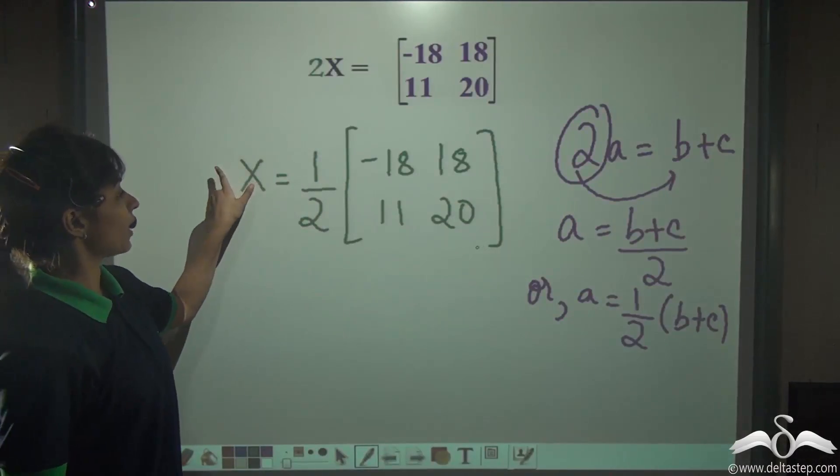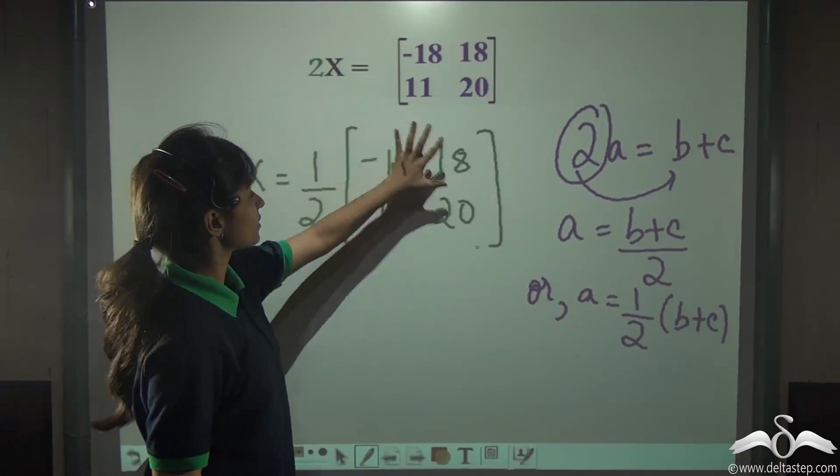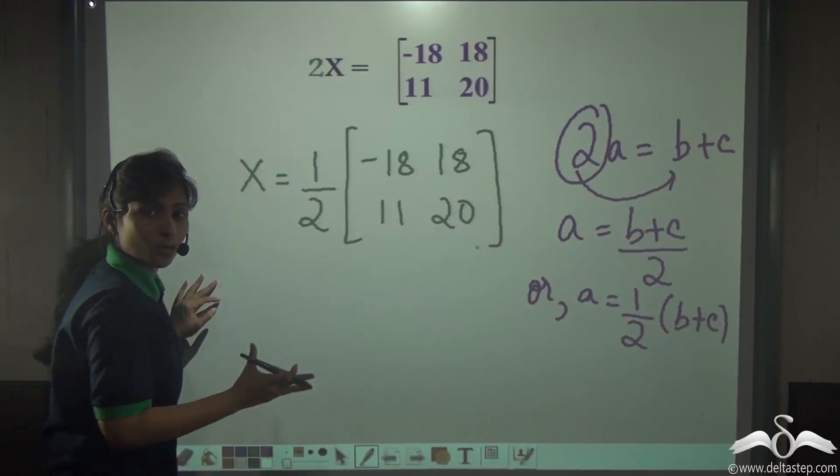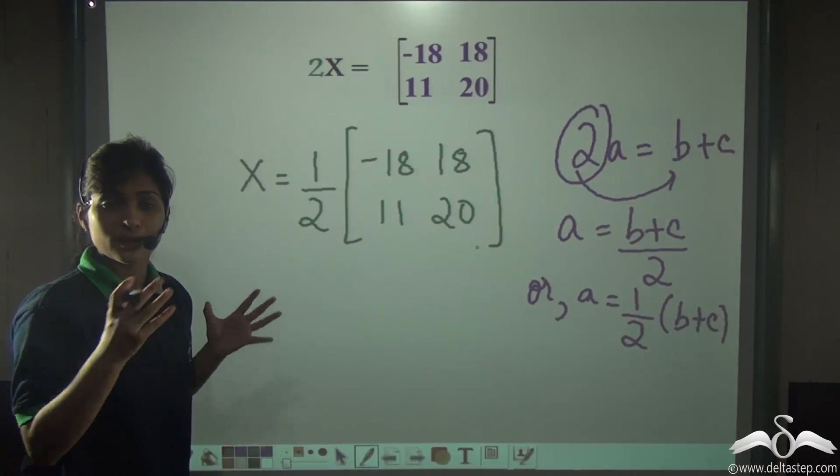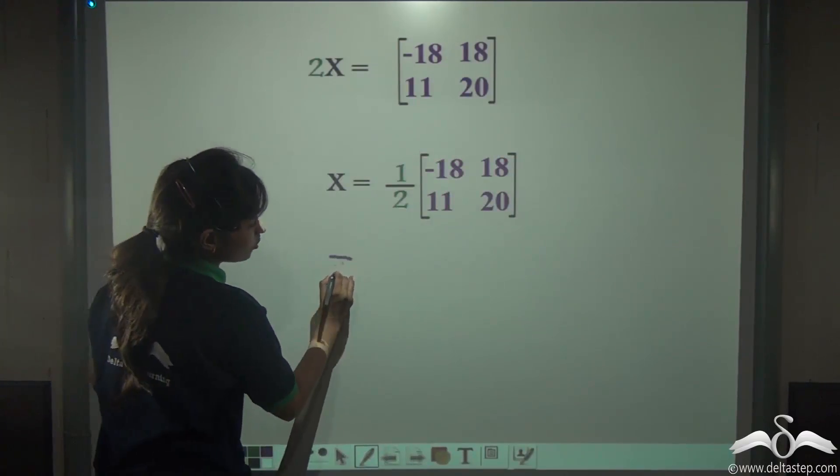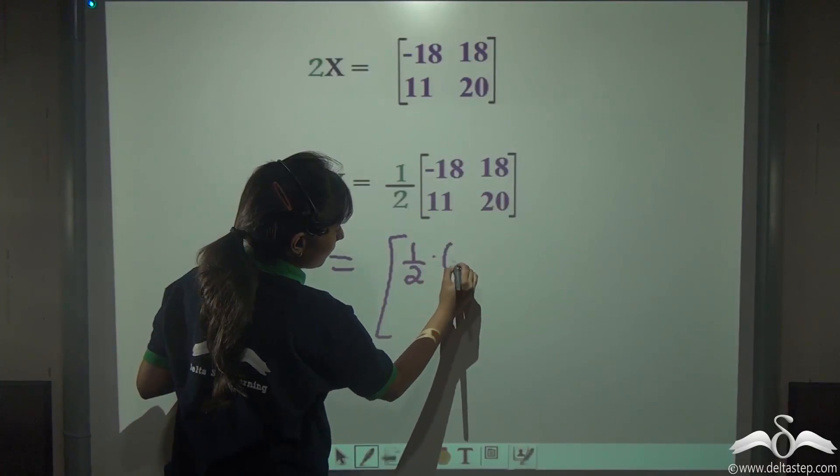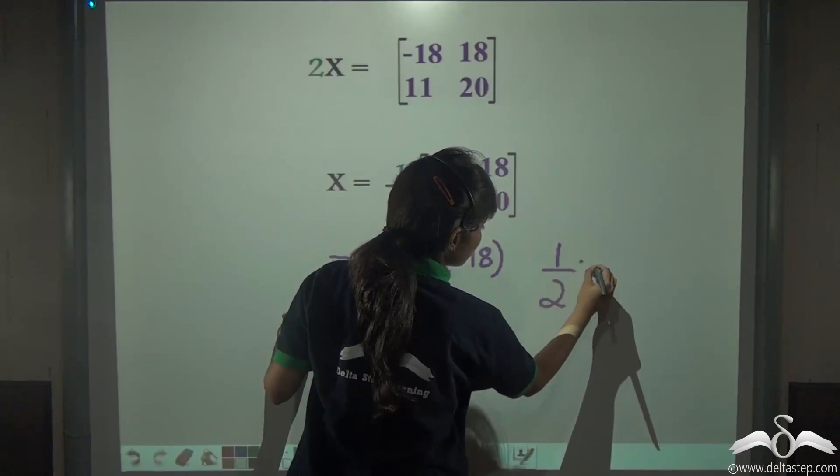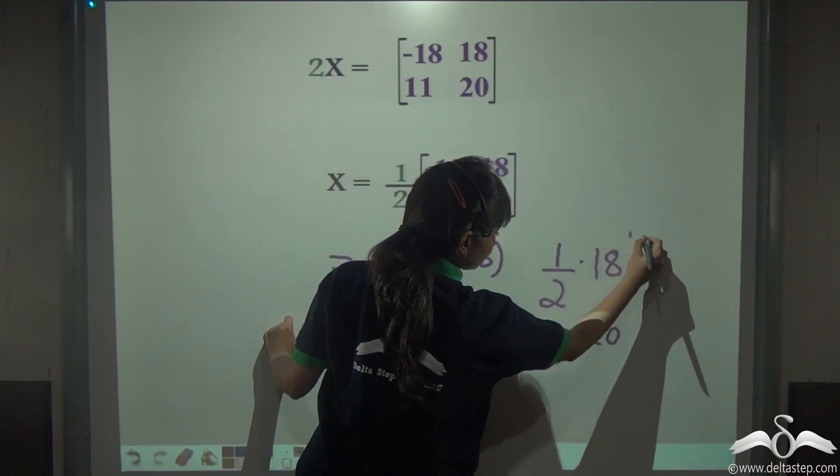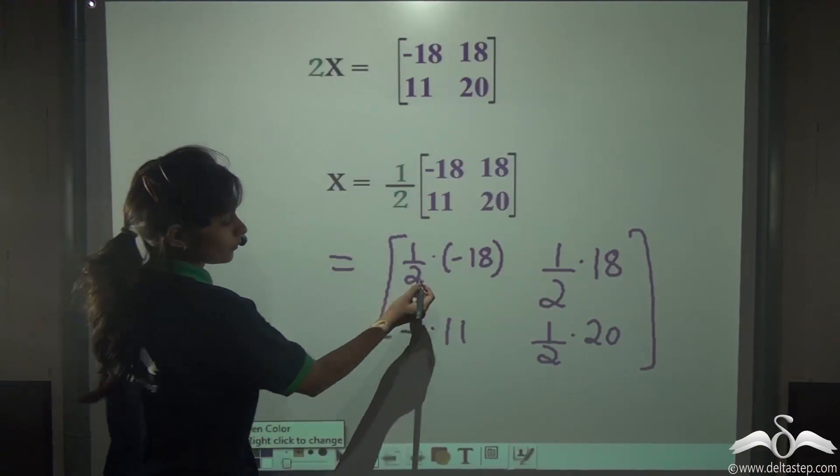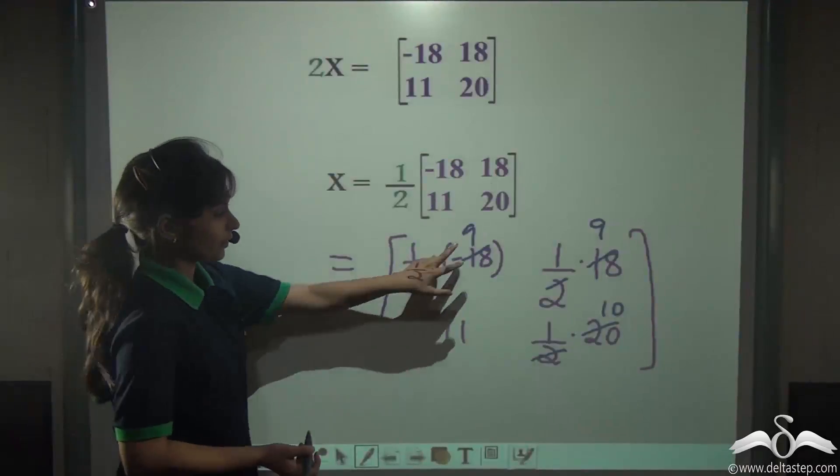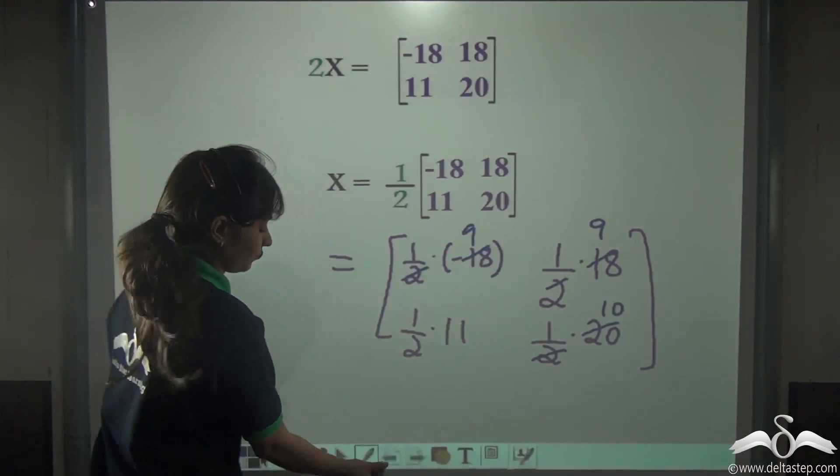Simply just by putting the half there, that is taking 2 to this side, we get the matrix X. Now this is not the answer. What you get is a number, that is half, to be multiplied with a given matrix. Now we will find half into this matrix. Let us solve: half into minus 18, half into 18, half into 11, and half into 20. What do I get? -9, 9, 11 by 2, and 10. The matrix X we had to find out is [-9, 9, 11/2, -10].